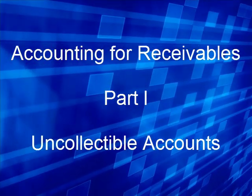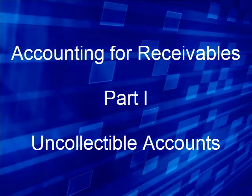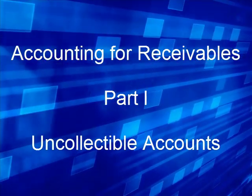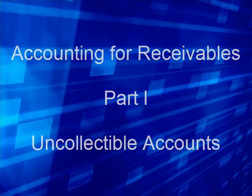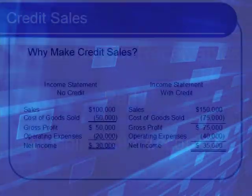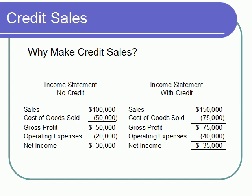This is Craig Pence, and in this video we'll examine accounting for uncollectible accounts expense. When companies begin to make sales on credit, they open the door to a huge number of record-keeping complications and costs. Clerks have to be hired, and a credit manager has to be hired to oversee the credit department. This is very costly, so we might wonder why companies ever decide to make credit sales at all.